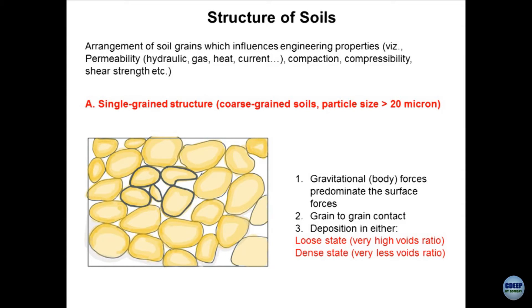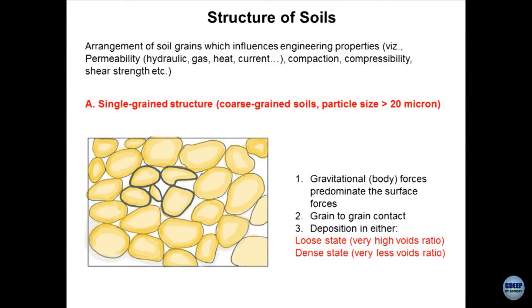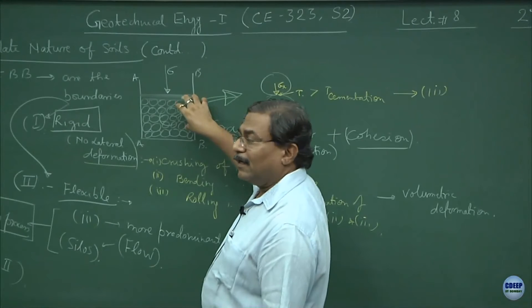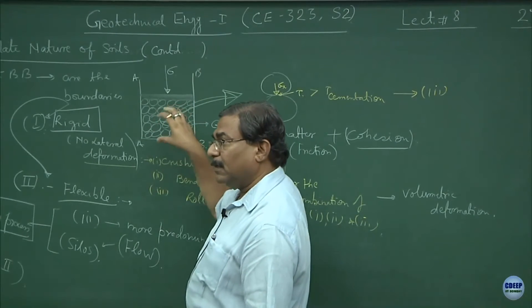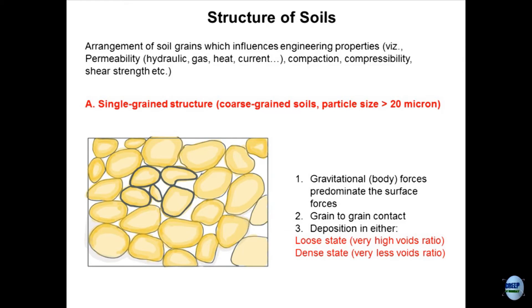In single grain structure, each grain is so important that removing grains can be modeled — for example, a tunneling process is nothing but removing soil mass slowly to create a tunnel. Single grain structure is also called coarse grain material. The another variety would be fine grain materials, with particle size more than 20 microns. In single grain structure, gravity predominates — body forces — and the settlement of particles to form a deposit is because of gravity. Surface forces are not significant.